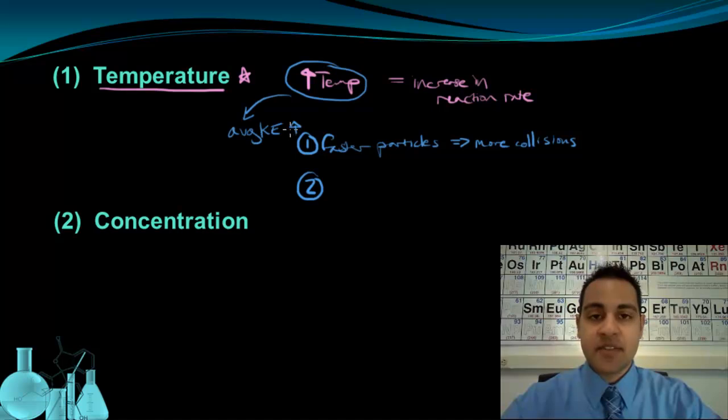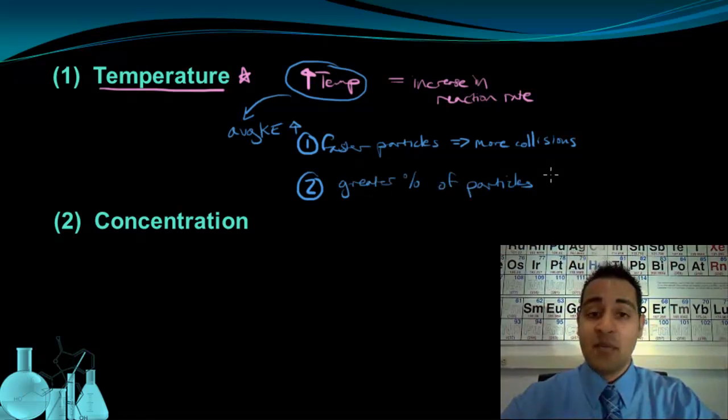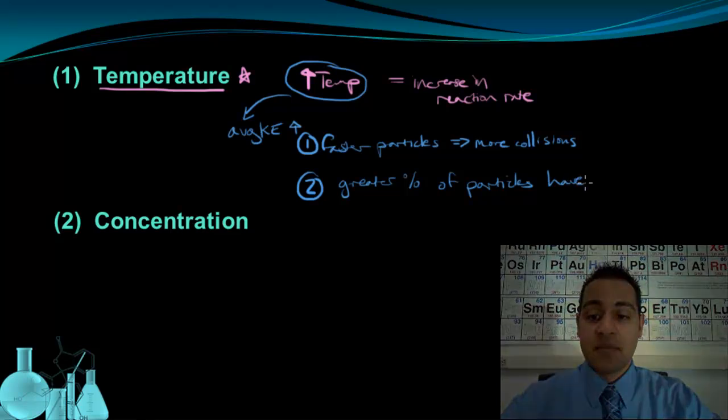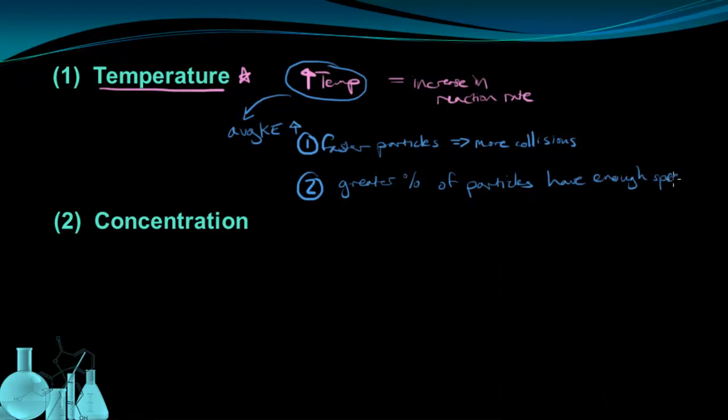The second result we see is that when you increase the average kinetic energy of the sample, that means more particles in the sample are going to have that minimum amount of energy needed to have the reaction in the first place. So that first part of collision theory that says the particles need to have enough energy or enough speed, while increasing the temperature means that more of the particles will have that minimum amount of energy. So we would say that a greater percent of the particles have that minimum amount of energy or have enough speed. So this is also going to result in more successful collisions overall.